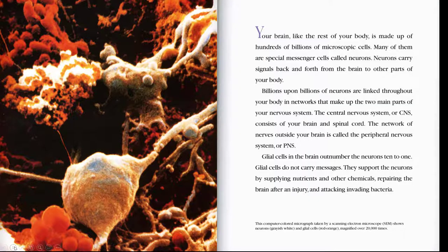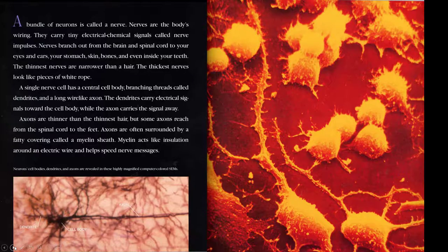Your brain, like the rest of your body, is made up of hundreds of billions of microscopic cells. Many of them are special messenger cells called neurons. Neurons carry signals back and forth from the brain to other parts of your body. Billions upon billions of neurons are linked throughout your body in networks that make up the two parts of your nervous system. The central nervous system, or CNS, consists of your brain and spinal cord. The network of nerves outside your brain is called the peripheral nervous system, or PNS. Glial cells in the brain outnumber the neurons ten to one. Glial cells do not carry messages. They support the neurons by supplying nutrients and other chemicals, repairing the brain after an injury, and attacking invading bacteria.